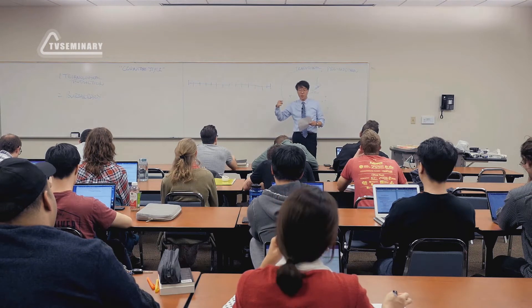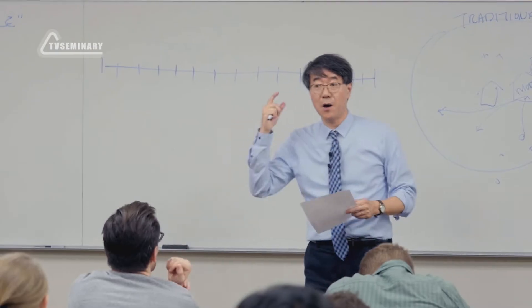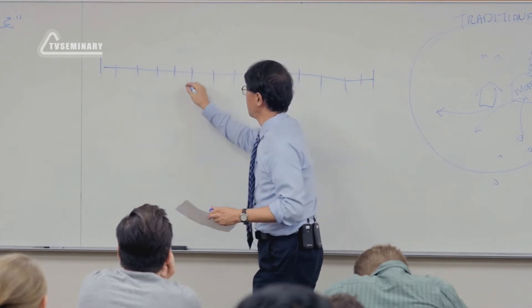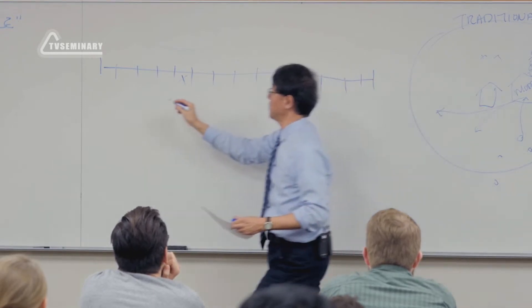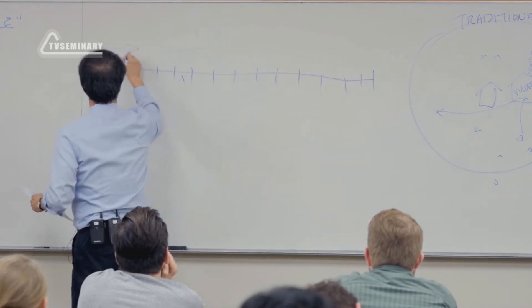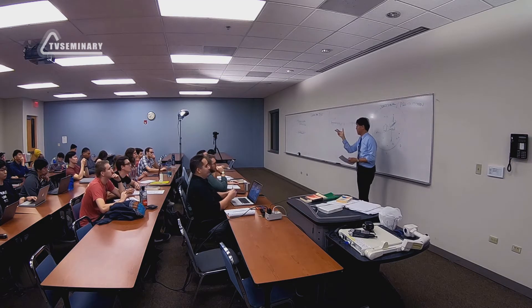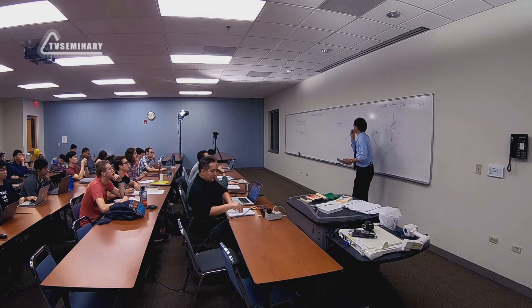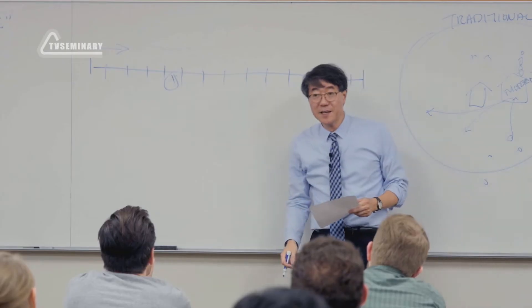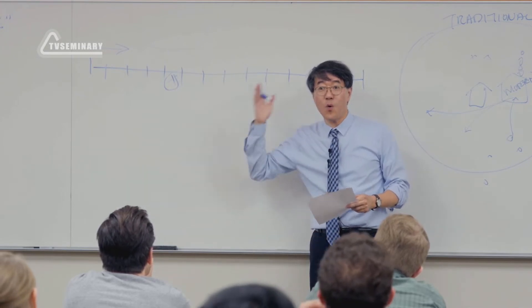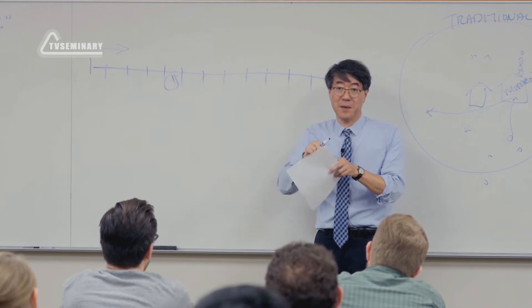Допустим, вы работаете на современном заводе, который производит ружья. В промышленную революцию прежде всего начали делать именно ружья. Допустим, вы работаете на конвейере — вот начало конвейера, и со временем к концу конвейера ружьё собирается полностью. А вы находитесь в одной точке, и на современном производстве знаете только свою операцию — больше вам ничего знать не надо.